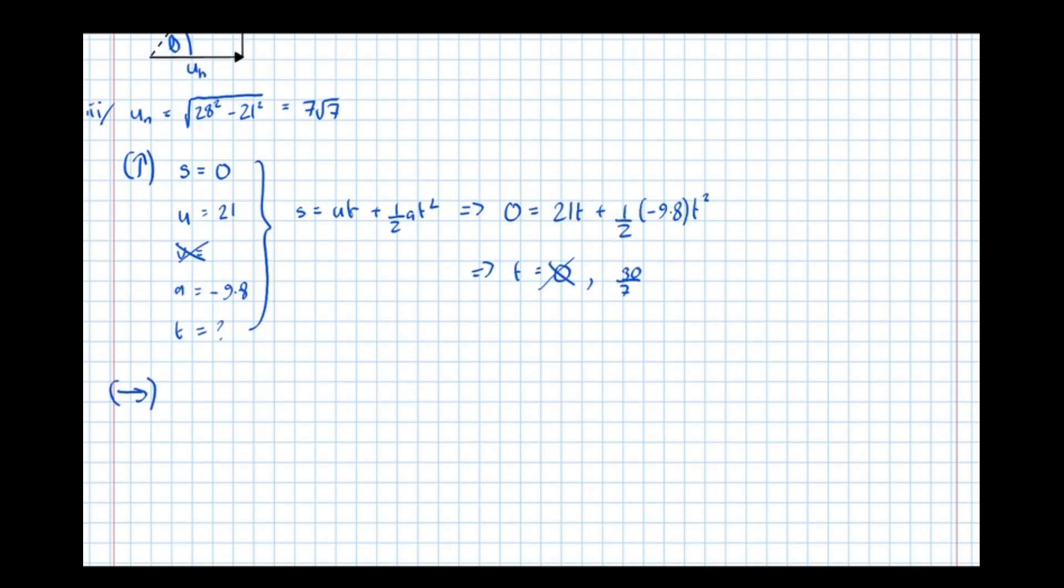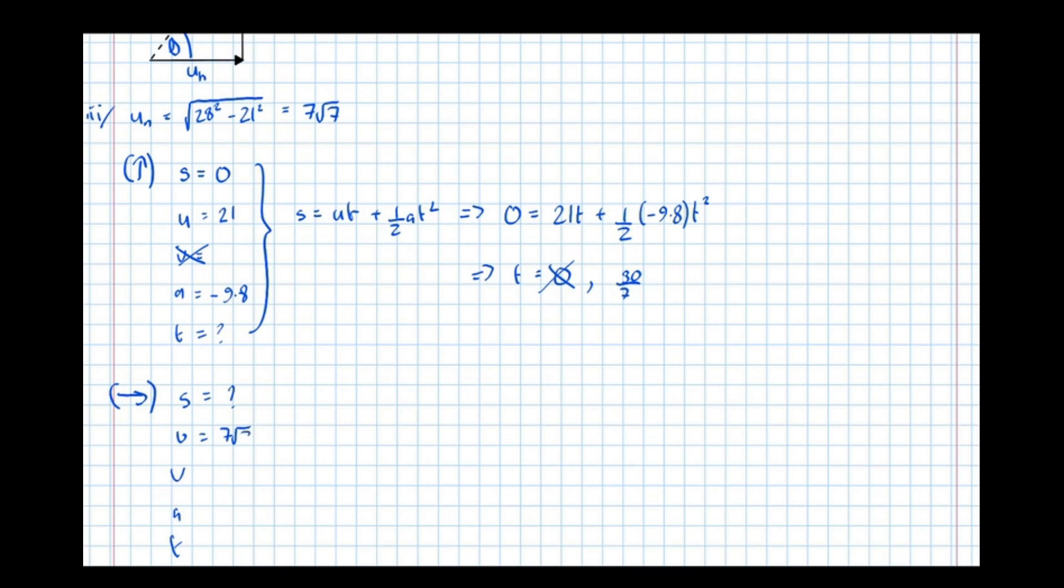Right now, considering horizontal motion only. Again, S, U, V, A, T. Displacement is what we're trying to find. The initial velocity was 7 root 7. The final velocity, well, in the horizontal direction, it's actually not accelerating at all. It's only accelerating up and down. The forces acting on that, assuming there's no air resistance, the forces acting on the particle are only its weight, which creates its acceleration due to gravity. So velocity we can also say is 7 root 7 in that direction, and time we worked out to be 30 over 7.